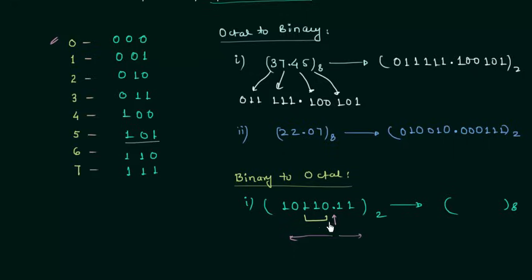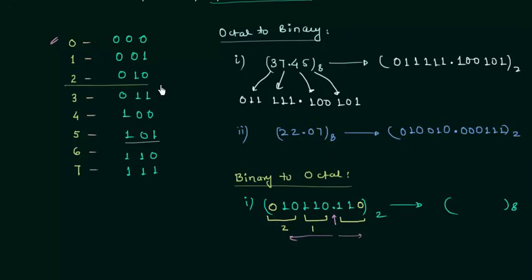For the integer part, the first group from the right is 110, and the second group is 010. We can add a leading 0 to make it 3 bits — adding 0 makes no difference to the number. For the fractional part, starting from the left, the first group is 110, and we add a trailing 0 to make it 3 bits. Using the table: 010 is 2, 110 is 6, and 110 is 6. So the octal equivalent of this binary number is 26.6.